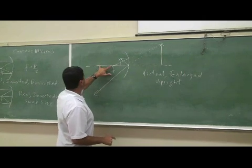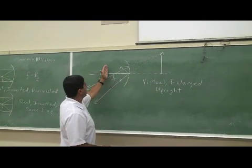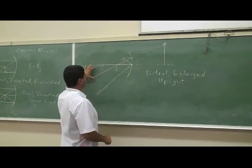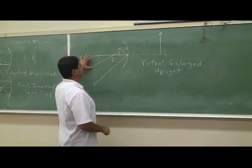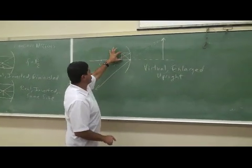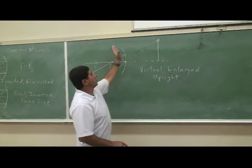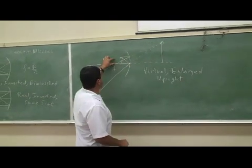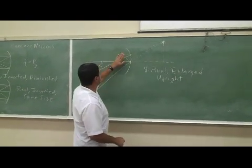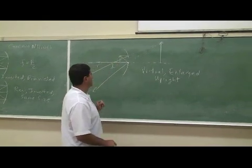So now notice what happened. When we went from between the center and the focal point, we got an enlarged image back here, but it was real image. But when we went to here, now it became a virtual image. So what's going to happen exactly at the turning, the turnaround point? The focal point is the turnaround point.